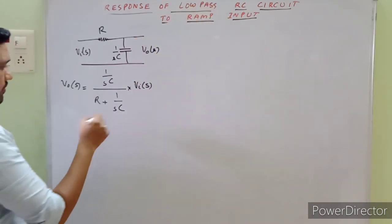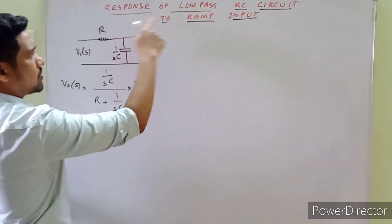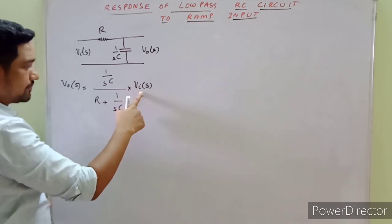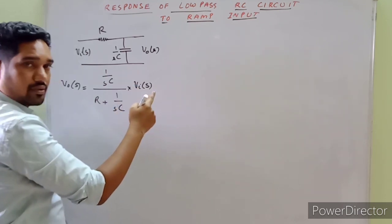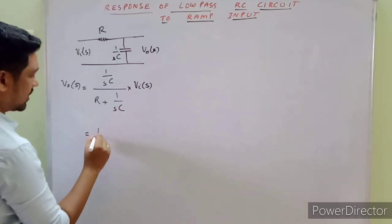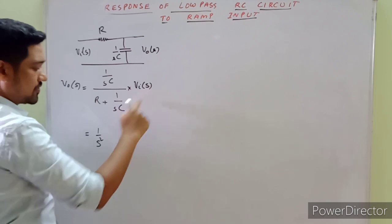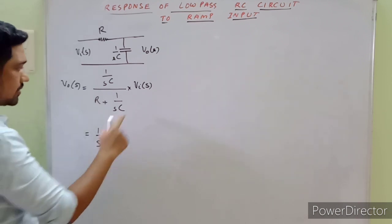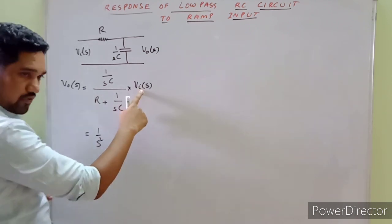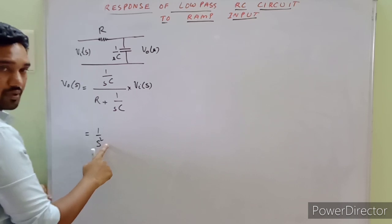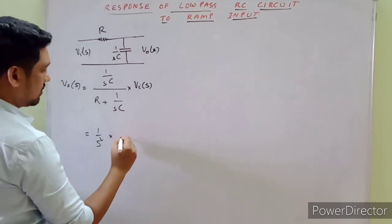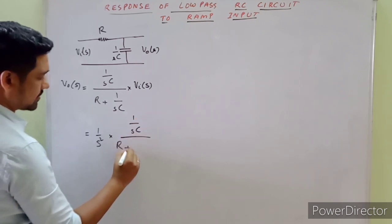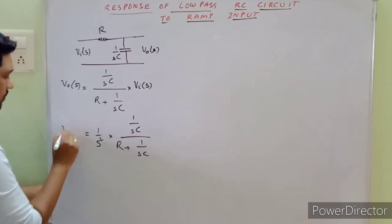This is the response of the low-pass RC circuit for a ramp input. The input voltage is a ramp, and the Laplace transform of a ramp input is 1/s². This has been derived previously — please find the link in the description box.